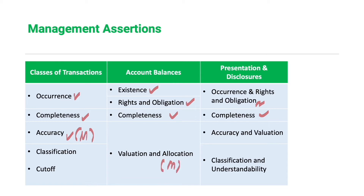Accuracy pertains to measurement. The equivalent of accuracy for account balances is valuation and allocation, which also talks about measurement. Note that we do not have classification and cutoff assertions separately under account balances — not because they are unimportant, but because classification and cutoff are already implicit in valuation and allocation. For example, proper recording of depreciation or estimation of bad debt expense is already incorporated under allocation.